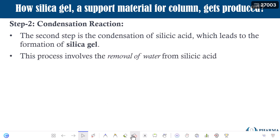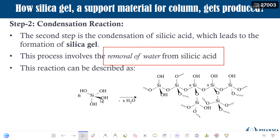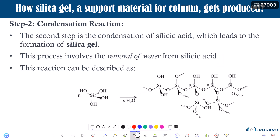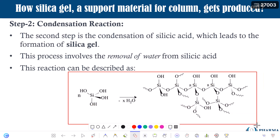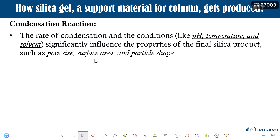This process involves the removal of a water molecule from the silicic acid. The reaction can be represented as follows: the silicic acid undergoes the condensation reaction, the water molecule gets removed, and you get silica gel. We will also understand some very important aspects of the condensation reaction.